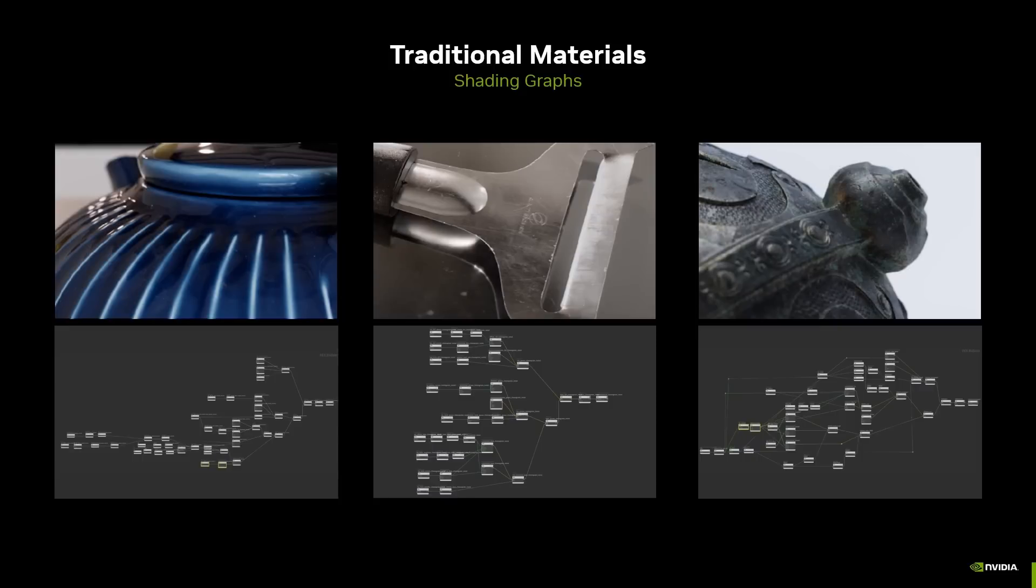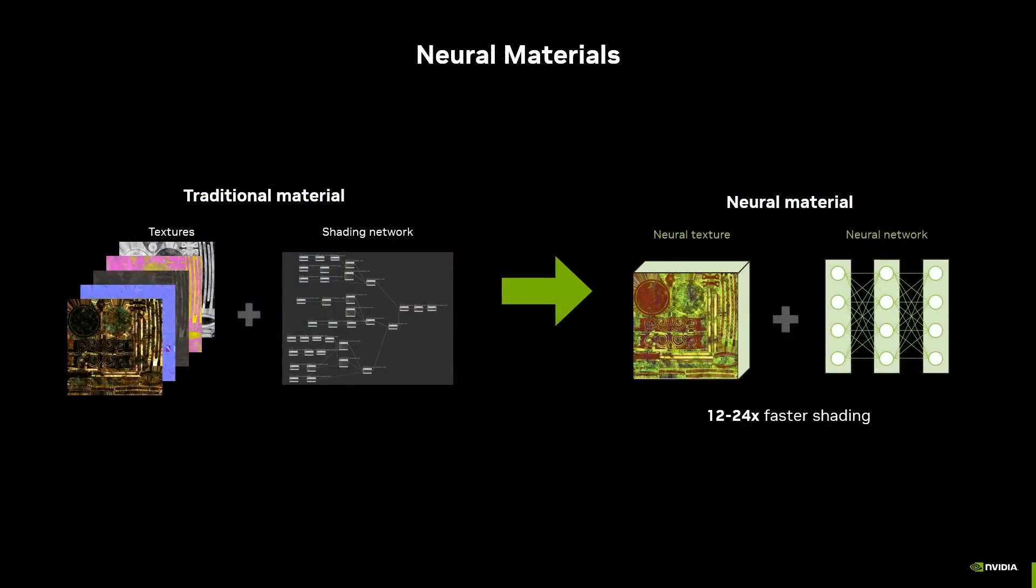Offline rendering achieves a realistic look using sophisticated shading graphs, but these are too costly for real time. Our main idea is to replace these expensive, specialized shading graphs with a universal and computationally efficient graph, a neural network, which enables 12 to 24 times faster shading calculations.